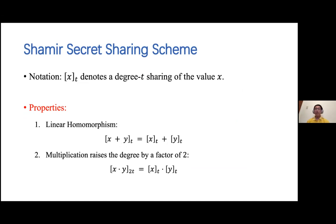We will use square brackets of X with subscript T to represent a degree-T Shamir sharing of the value X. It requires at least T+1 shares to reconstruct the secret and any T shares are independent of the secret value. We will use the following two properties of the Shamir secret sharing scheme. The first one is linear homomorphism: adding two degree-T sharings X and Y gives you a degree-T sharing of the secret X+Y, because we add the underlying two polynomials together, so the degree remains the same. The second property states that multiplying two degree-T sharings gives you a degree-2T sharing of the secret X times Y, because we multiply the underlying two polynomials, so the degree becomes 2T, and the secret is the product of the original two secrets.